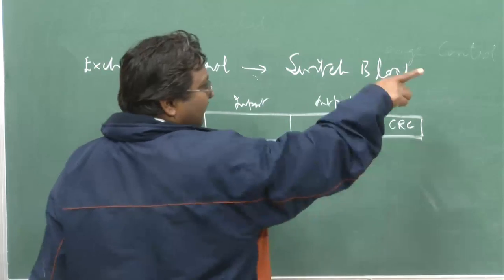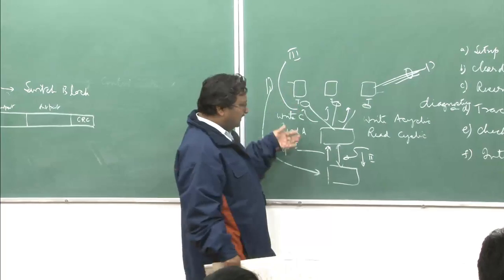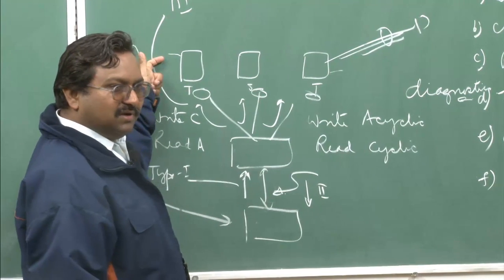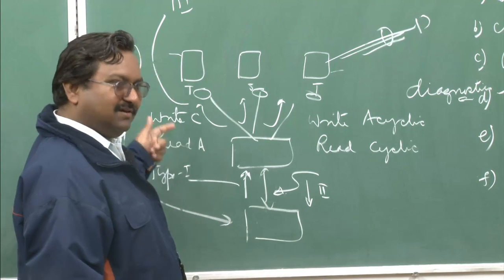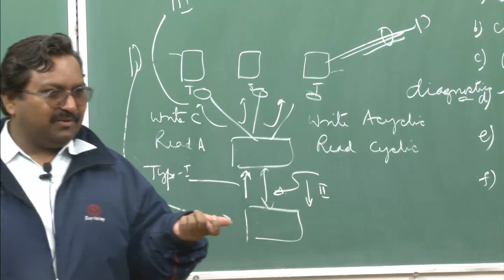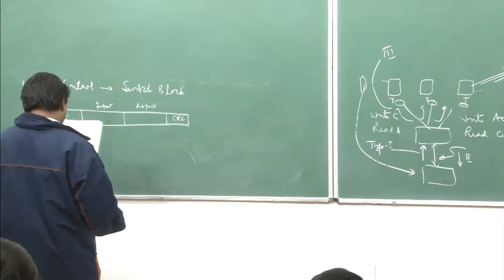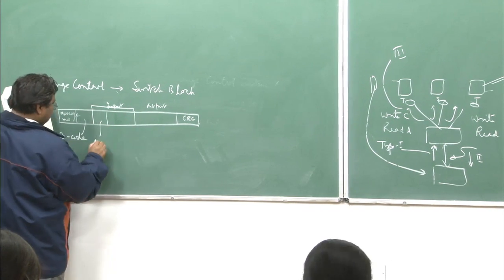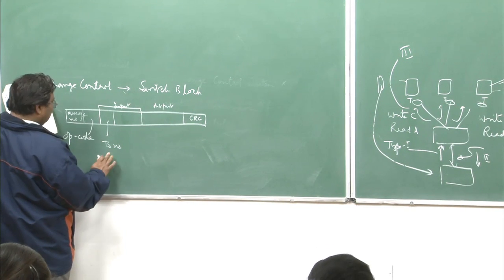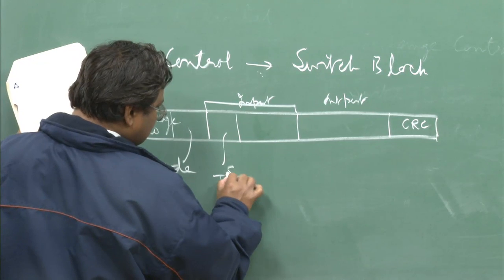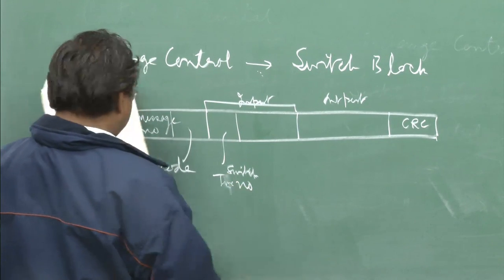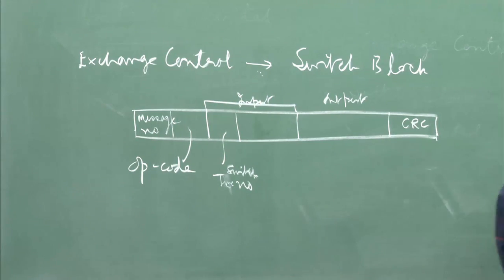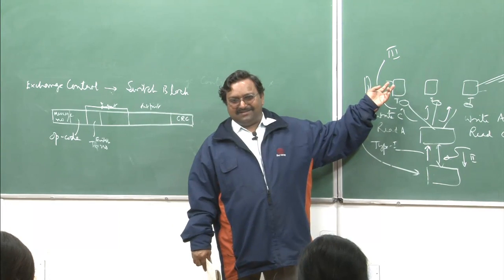There is a reference message number in type 2: this information is about which type 1 message number was received. So in the reverse direction, this reference message number is simply copied from the forward message number. For example, if I say reserve the path from this port to this port, message number 1 was sent. If it resulted in three type 2 response messages, all three will be numbered 1, 2, 3 in the reverse direction, but they all should have reference number pointing to message 1. Type 2 is always a response — the initiator is always the exchange control (master), and the switch block control is always the slave responder.